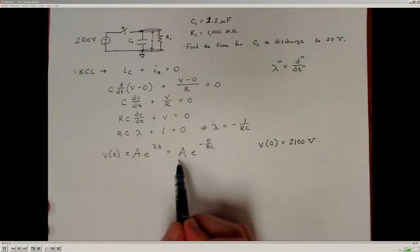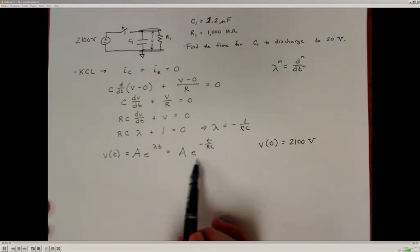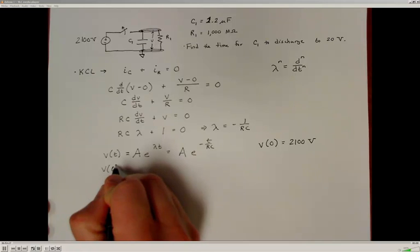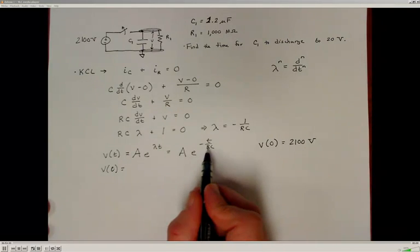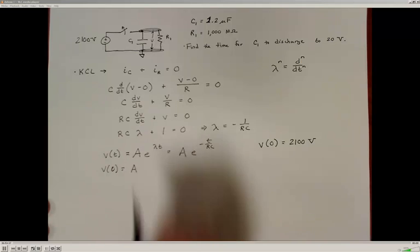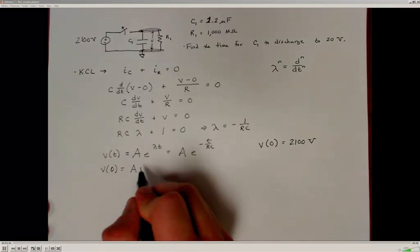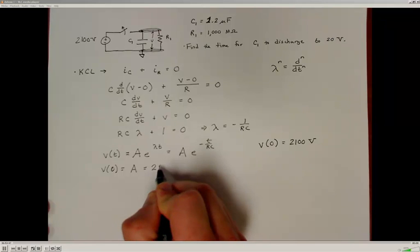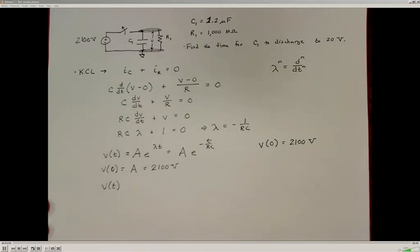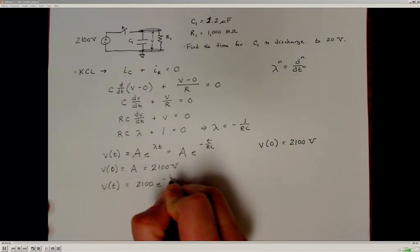Now back to solving for our unknown constant A. We know what the value of this function should be when time equals zero, so we set time equal to zero in our assumed solution. E raised to zero is 1, so that leaves just A. From our initial condition, the value at time zero has to be 2,100 volts, so A equals 2,100. Our final solution is: V(t) = 2,100 times e to the negative t over RC.